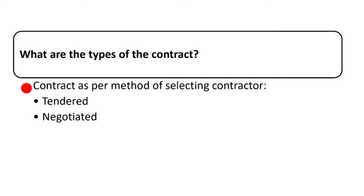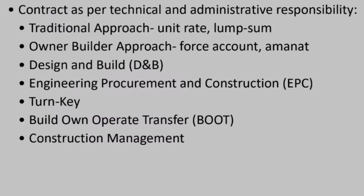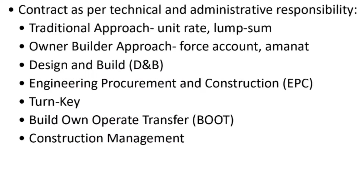As per the method of selecting a contractor, there are two types of contract: tendered contract and negotiated contract.